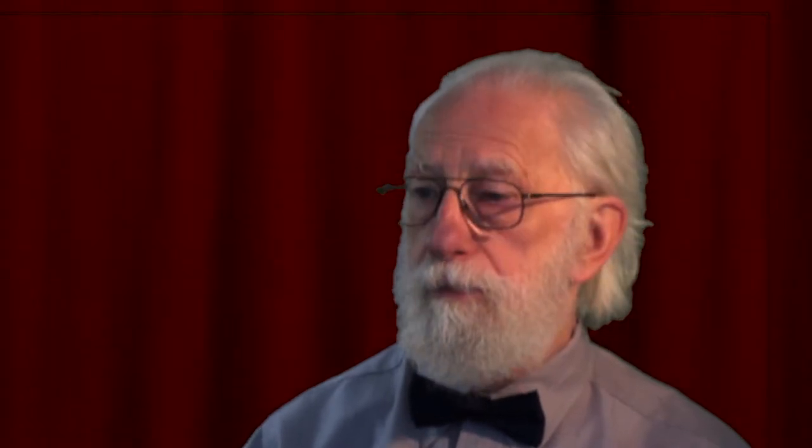My solution was to treat the study as a database of sentences, each containing an idea, without worrying about differences between the respondents. I did a simple analysis of the words used. I made a list of key terms, based on the phrases in the text, and on my own interests. And tagged the sentences with the key terms. This is the data I ended up with. 12 questions, 45 Quakers and attenders, who gave 399 answers, using 19,000 words, 2,749 of them unique, and 981 sentences tagged with 239 key terms. That's a lot of data to interpret.